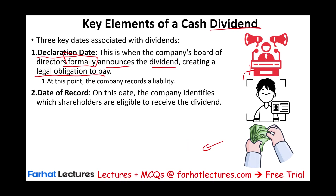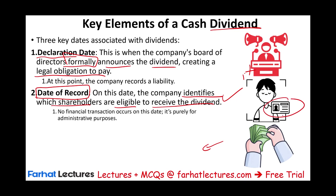The second date is the date of record. On this date, the company identifies which shareholders are eligible to receive the dividend. If you own the stock on this particular date, you will get your dividend. The good thing about this date is there is no financial transaction — therefore, there is no journal entry. It's purely an administrative process where they review the owners of the stock.